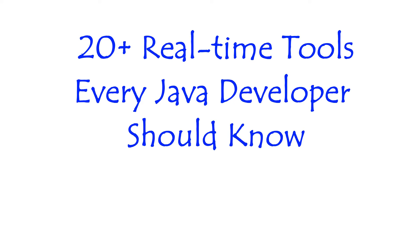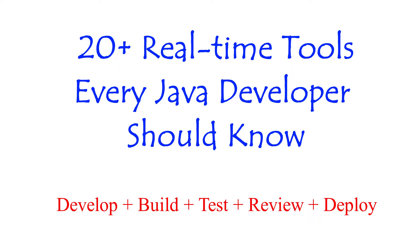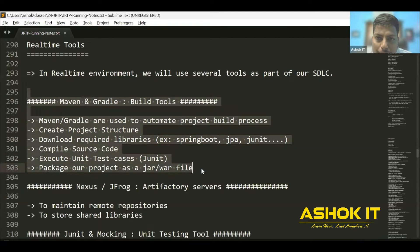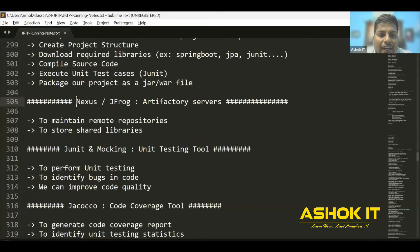In this video we will understand top 20 plus real-time tools that every Java developer should know to develop, build, test and deploy our application in the real-time environment. Maven and Gradle are used as build tools to automate the project build process. Nexus and JFrog are used as artifact factory servers to maintain shared libraries for our projects in the company.